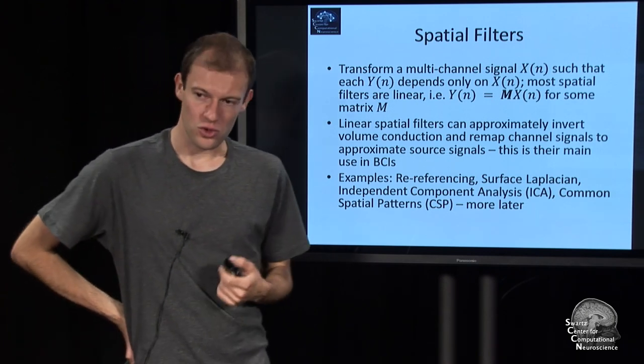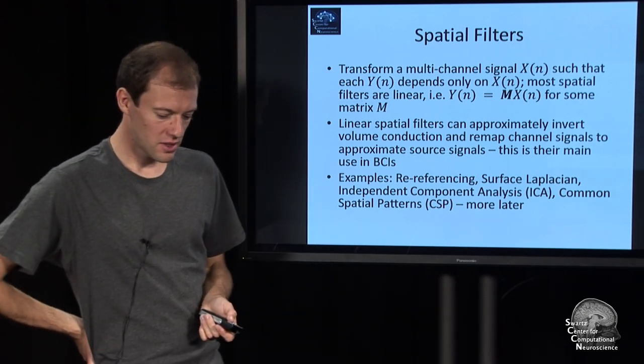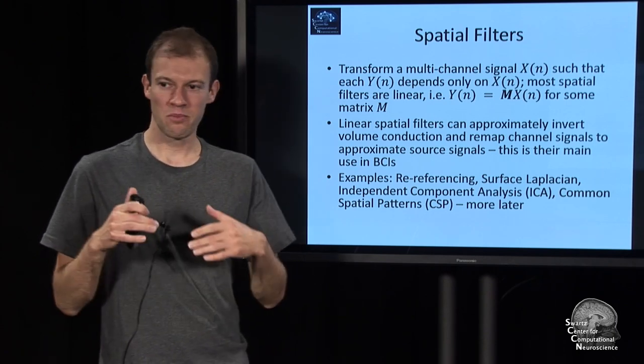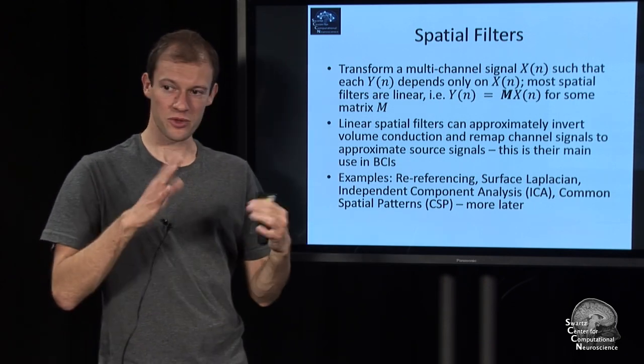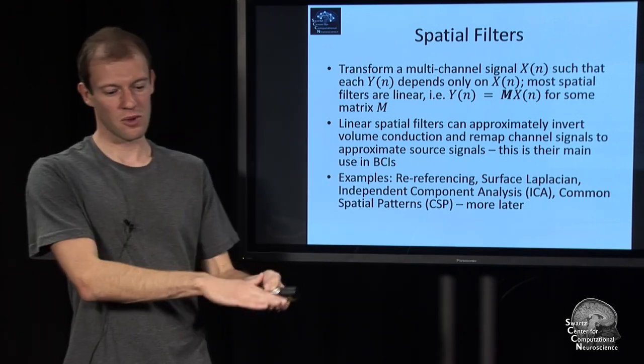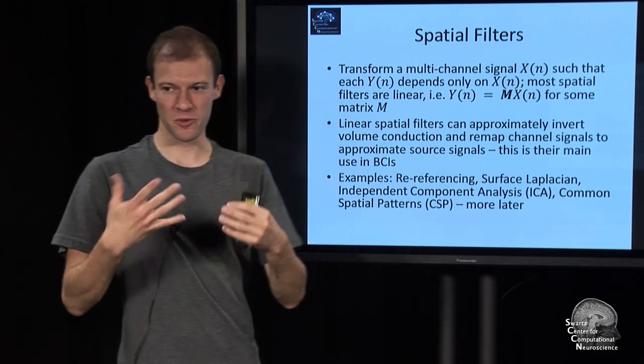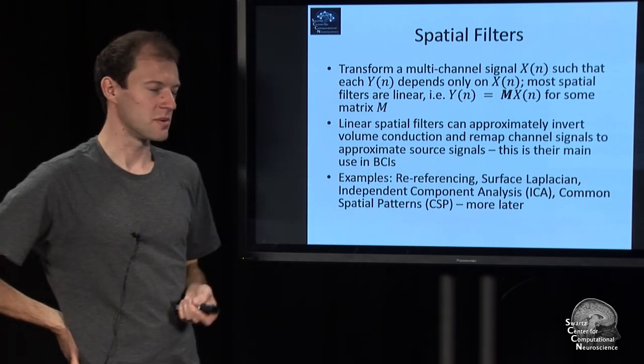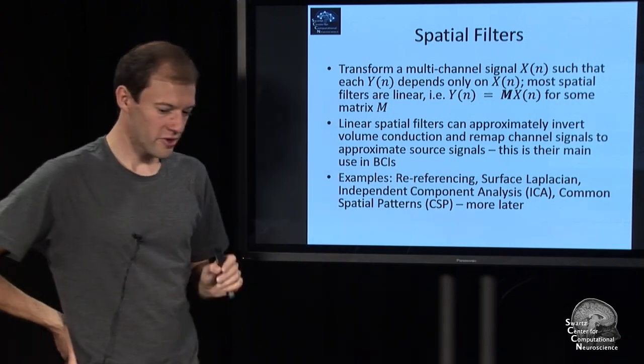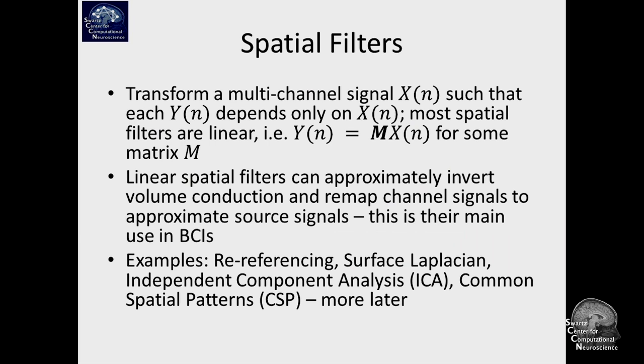There is one reason why these are so important in BCIs. The volume conduction in the brain that I talked about in the second lecture is a linear mapping. So the mapping from a source to all the sensors is linear, and so you can approximately invert it and go back from sensor observation to source observation also with a linear map, under some extra assumptions. That's why these are very practical in BCIs because you don't really want to operate at the level of sensor signals. You want to operate on the actual source processes because it's higher fidelity.